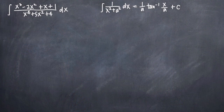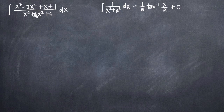In this particular problem, we've been asked to use partial fractions to take the integral of the rational function that I've written here. Our first step with any partial fractions problem is to ensure that the degree of the denominator is greater than the degree of the numerator, meaning that the largest exponent in the denominator is greater than the largest exponent in the numerator. In this case, that's true, so we can move on to the next step.